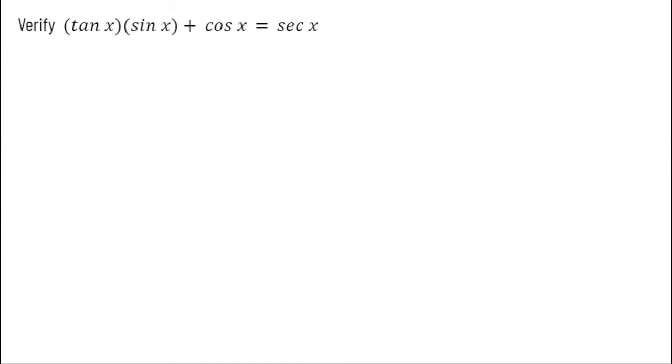In this first problem, we are asked to verify that tangent x times sine of x plus cosine of x equals secant of x. Now what do we mean by verify? Well, another word for verify is prove. We basically want to prove that this is true. To do that, we're of course going to need our identities.